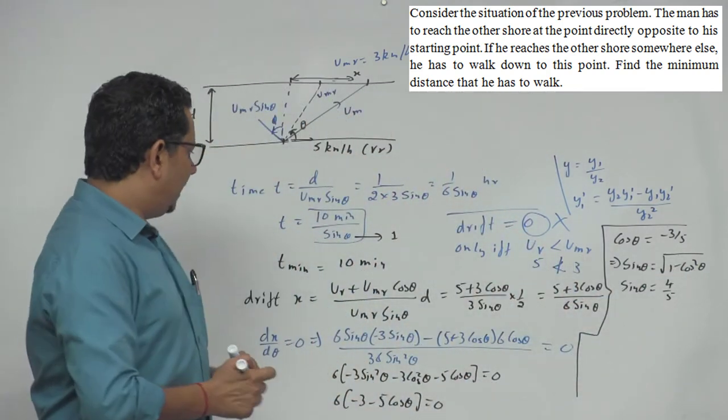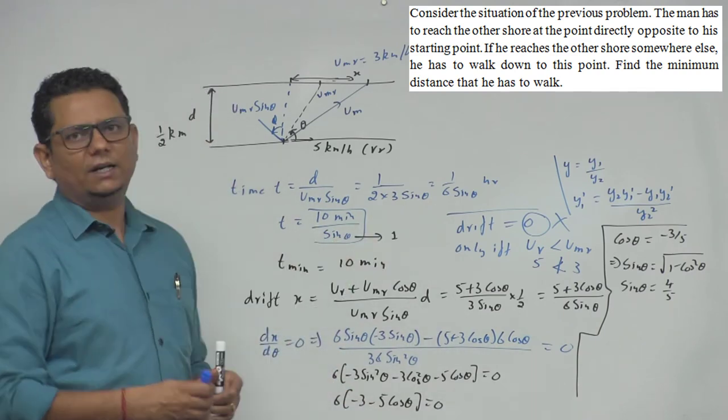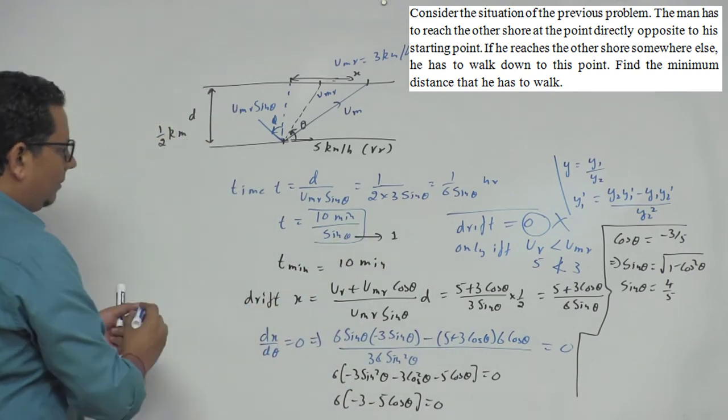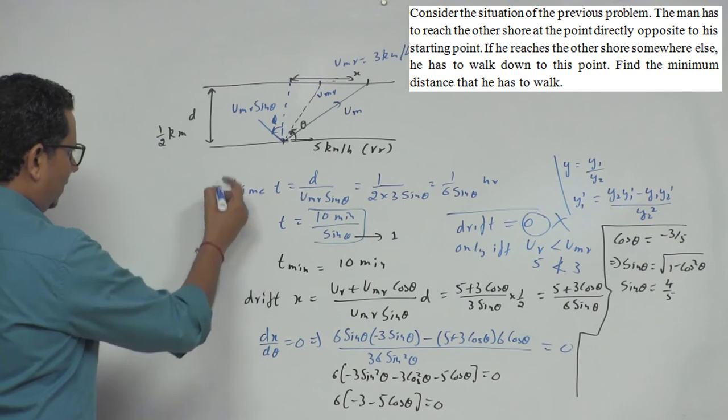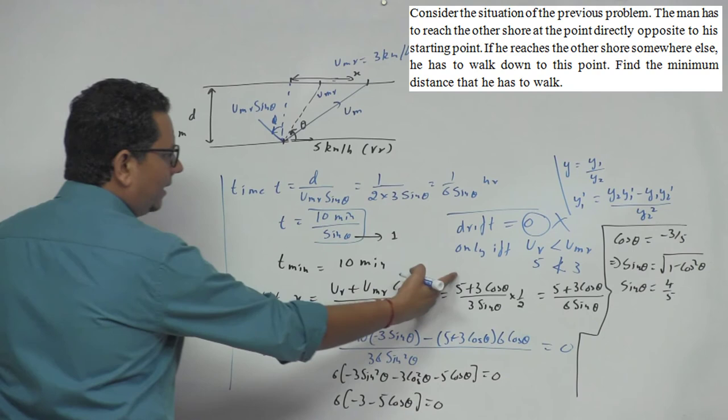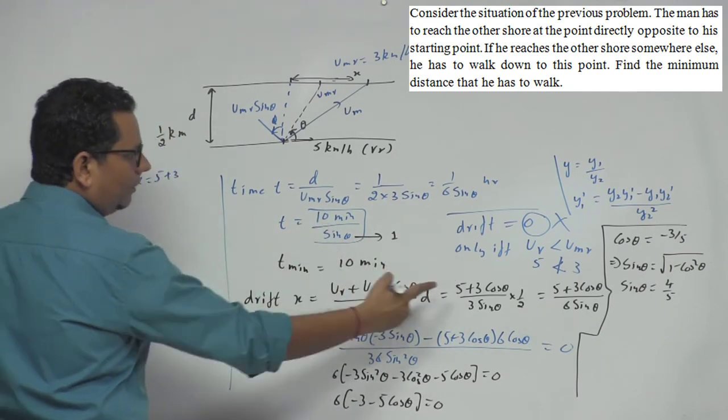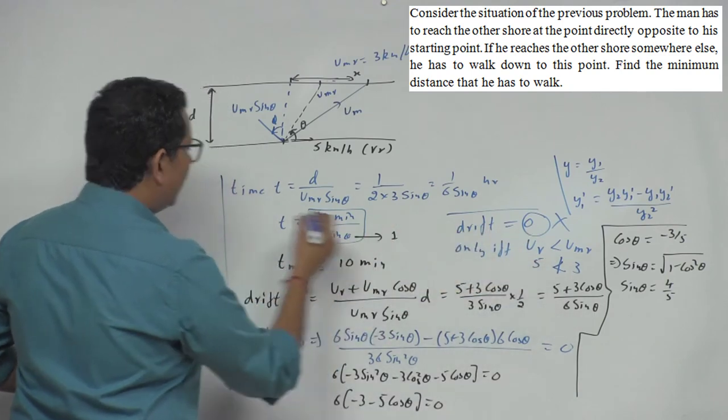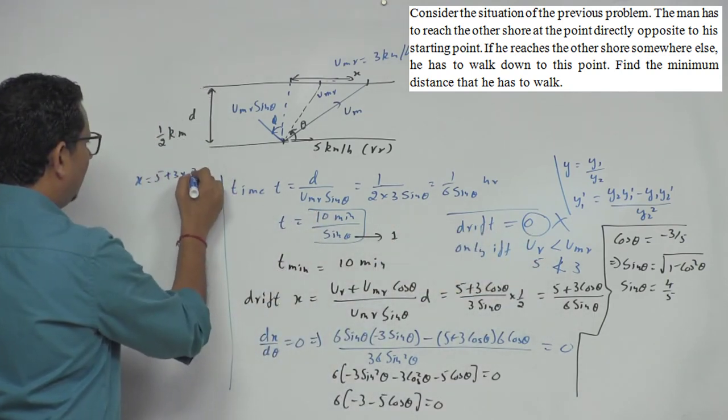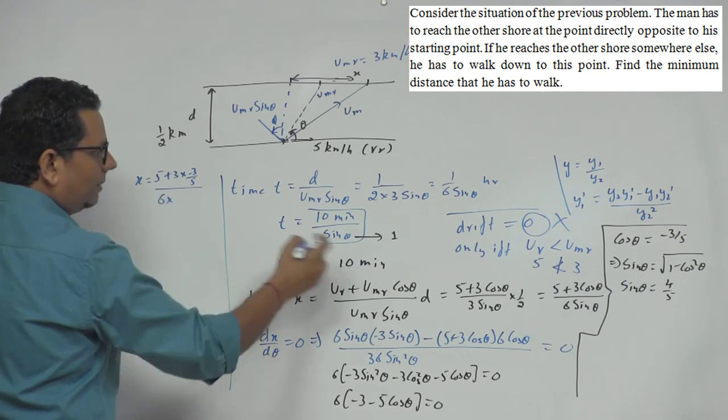If we put this in our original drift formula, then our final result: drift x will equal VR, which is 5, plus 3 multiplied by cos theta, which is minus 3/5, divided by 6 multiplied by sin theta, which is 4/5.